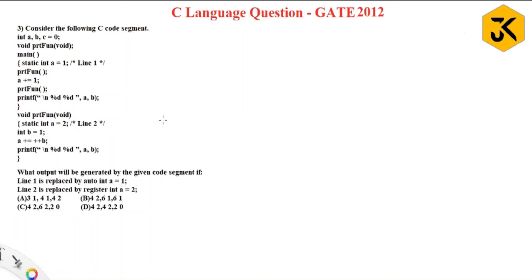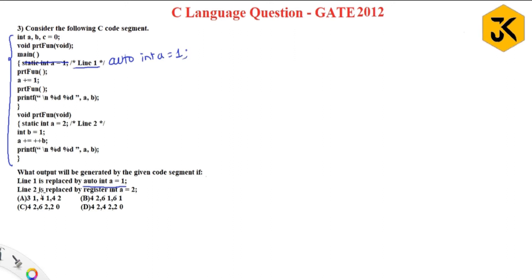Hello guys, welcome back. Let's look at a C language question from GATE 2012. They have given a few lines of code — please pause the video and go through it. They are asking: what output will be generated if line 1 is replaced by 'auto int a = 1' and line 2 is replaced by 'register int a = 2'?